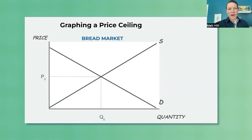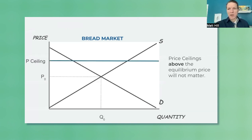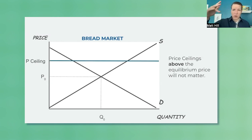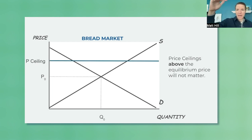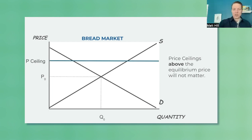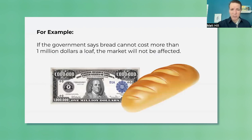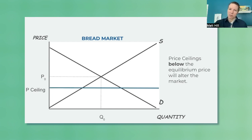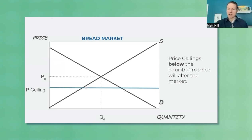Then we're going to introduce the graph. Here's our standard supply and demand graph — we put a price ceiling onto it. Now, this is often confusing because ceilings that are high up don't matter. Another term to use is maximum price. If we have a maximum price and it's super high, that's not going to affect the market. Ceilings up here don't matter; ceilings down here do matter. So: a price ceiling above the equilibrium is not going to matter. Just as an example, if the government said you can't charge more than a million dollars for bread, it's not going to affect anything. It's only ceilings that are below the equilibrium that are going to matter. The market wants to go to the equilibrium point where the curves cross, and then it bumps into the ceiling and can't get there. So ceilings below the equilibrium matter.